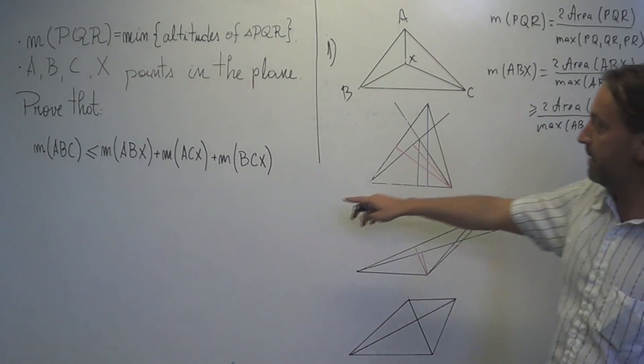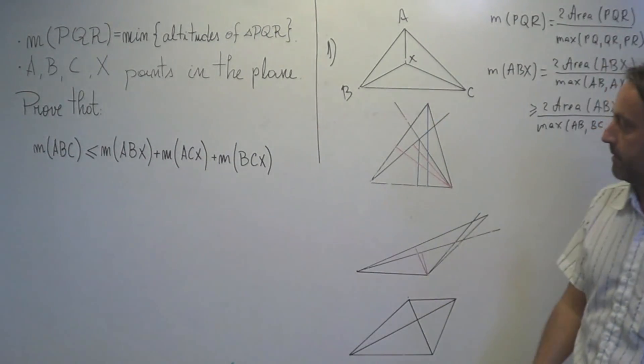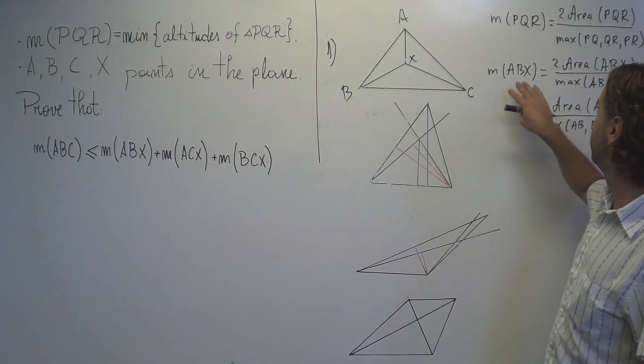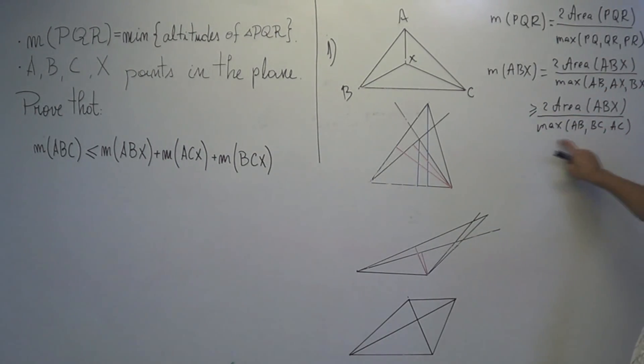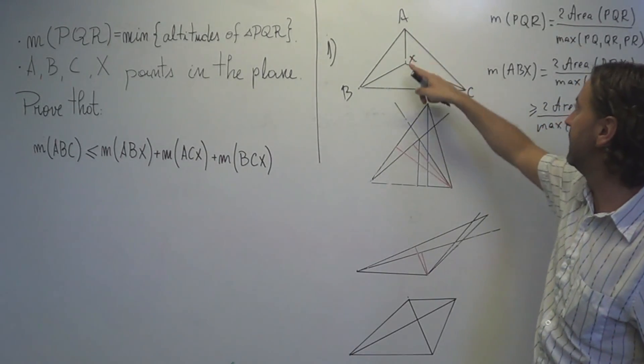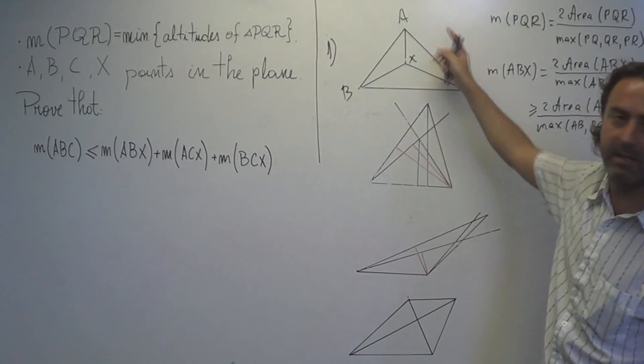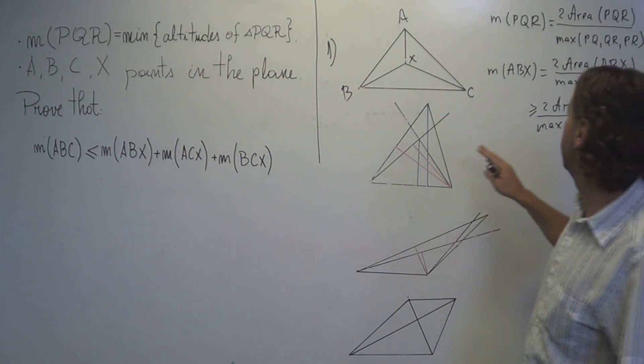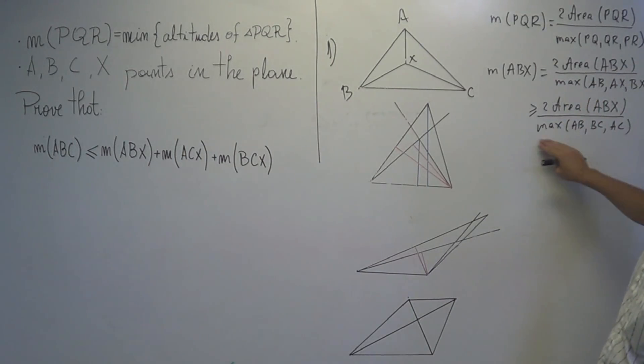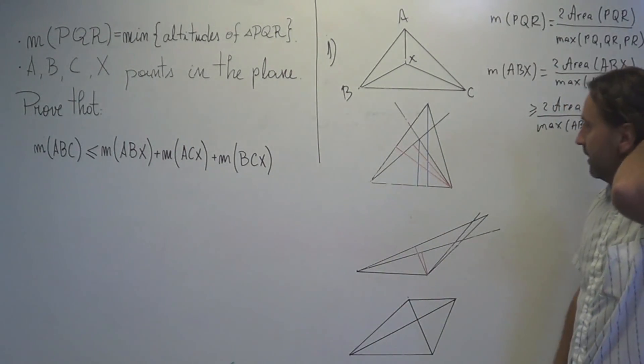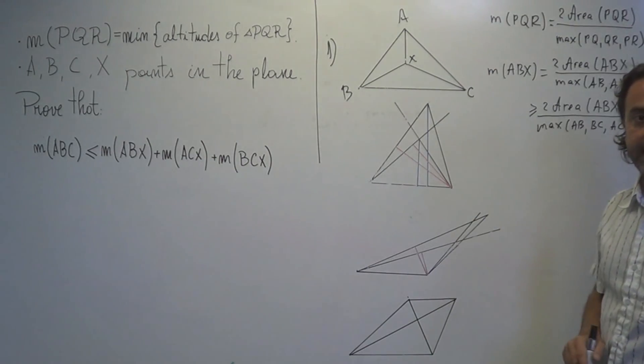So here we have the inequality that this is greater or equal to two times the area of ABX divided by the maximum of AB, BC, AC. Now, if we write the same for the other two and we take the sum of them, then we have the same denominator. We have the sum of the areas of ABX, AXC and BCX. So it will be the area of ABC divided by the maximum of the sides. So it's exactly this number. Okay, this is the case for X inside.